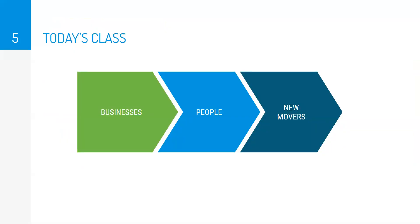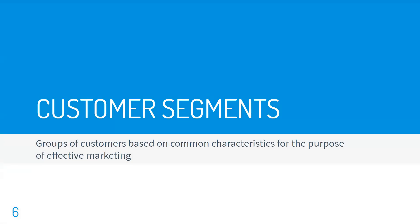In today's class we're going to cover two different types of sales lists: business-to-business or B2B, and business-to-customer or consumer, otherwise known as B2C. This includes generating lists of businesses, recently established businesses, people, and people who have recently moved to a new home or apartment. Before we start generating lists, let's talk about targeting customers using customer segments. Customer segments are groups of customers based on common characteristics for the purpose of effectively marketing to specific types of businesses or people. Customer segmentation can be practiced by all businesses, big or small, within any industry, regardless of whether they sell online or in person.